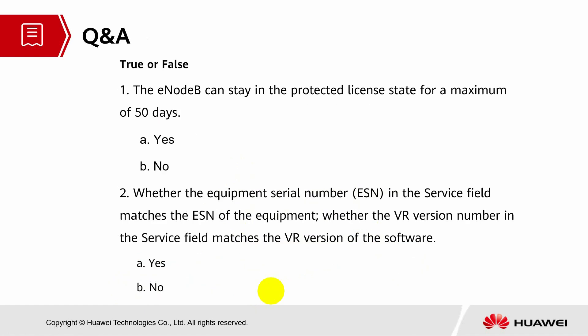Q&A session. Question 1: The EOB can stay in a protected license state for a maximum of 50 days — yes or no? The statement is wrong. Question 2: Whether the equipment serial number (ESN) in the service field matches the ESN of the equipment, and whether the VR version number in the service field matches the VR version of the software — is this statement true or false?